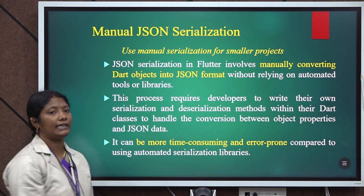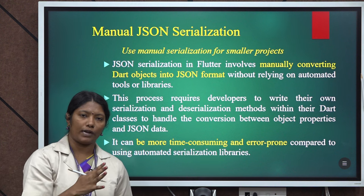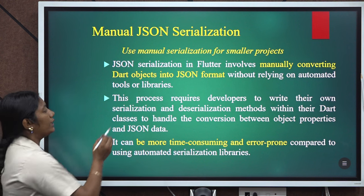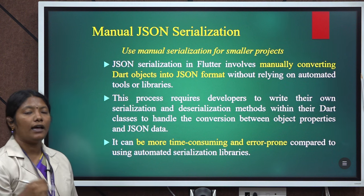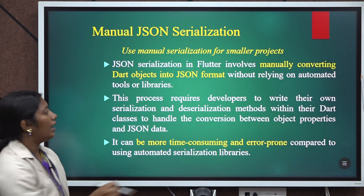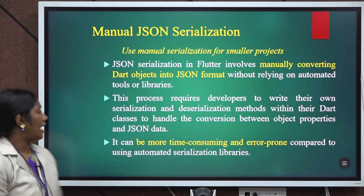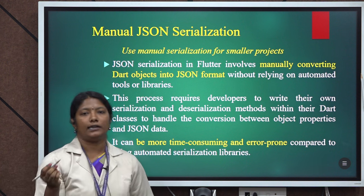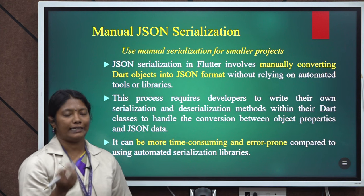Let me explain manual JSON serialization. In manual serialization, the process mainly requires developers to write their own serialization methods within their Dart classes to handle the conversion between object properties and JSON data. Compared to automatic serialization, it takes more time to convert a Dart object into a JSON format.